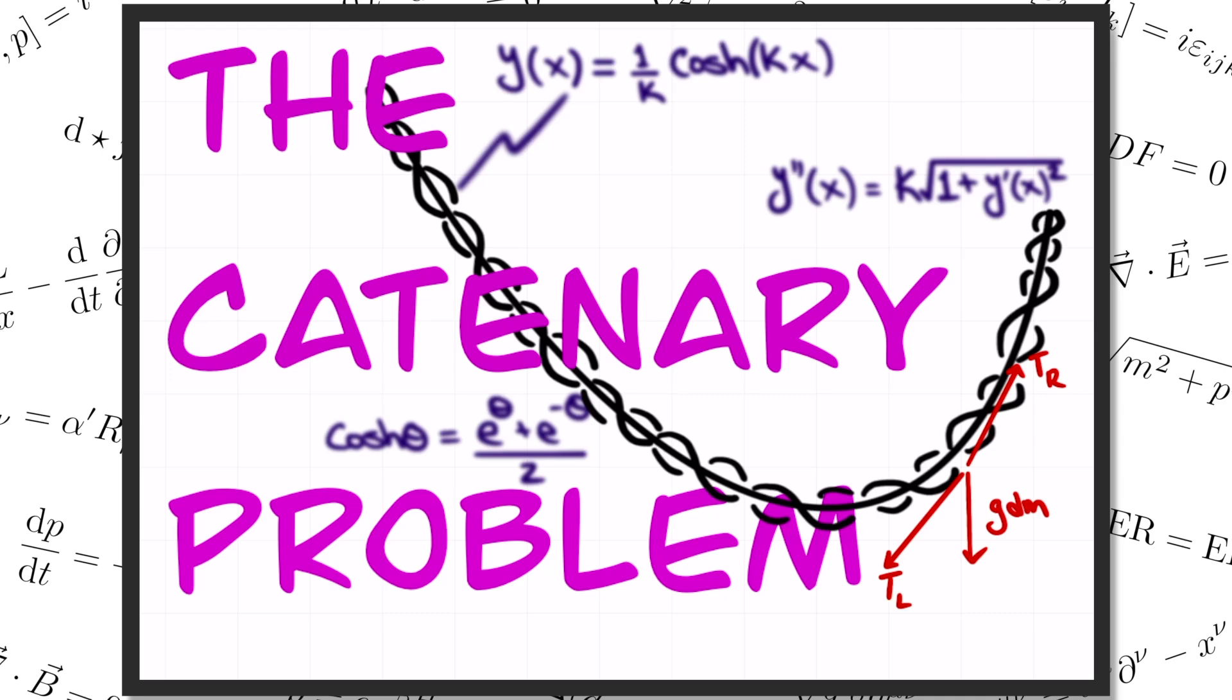Hello and welcome everybody, my name is Elliot, and in this video I'm going to tell you about a classic physics problem. The question is, if you hang a rope up with its ends pinned at two given points, what shape is the rope going to make?